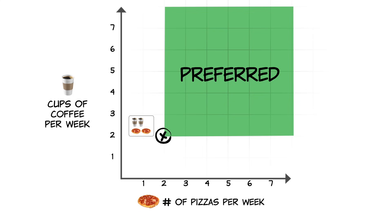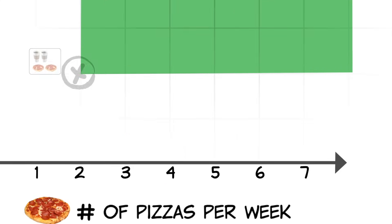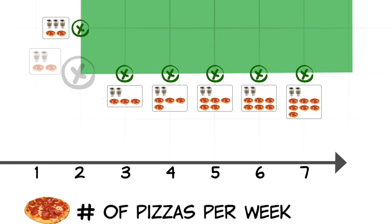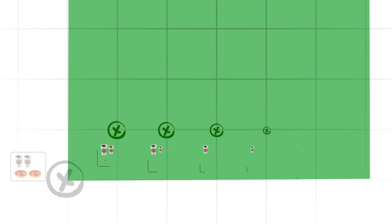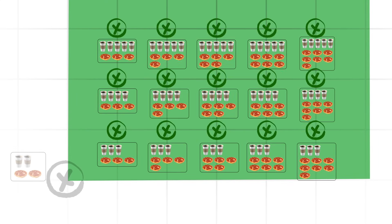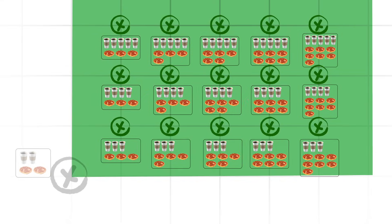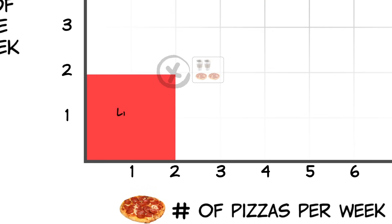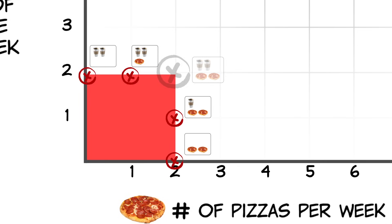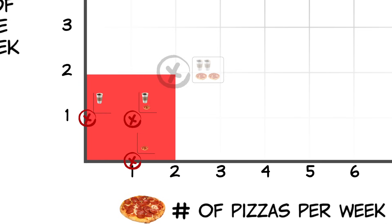Think about why that is. Any point here represents a combination of pizza and coffee such that you get more of at least one of them — maybe even more of both — and having more of what brings us utility is better. Any combination of goods in this other region, however, means you'll be getting less of at least one of the goods, maybe even less of both, and that will leave you worse off.